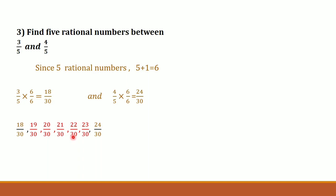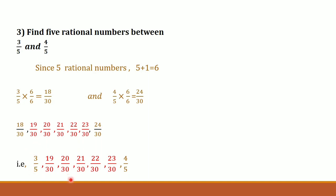The five rational numbers between 3 upon 5 and 4 upon 5 are 19 upon 30, 20 upon 30, 21 upon 30, 22 upon 30, and 23 upon 30.